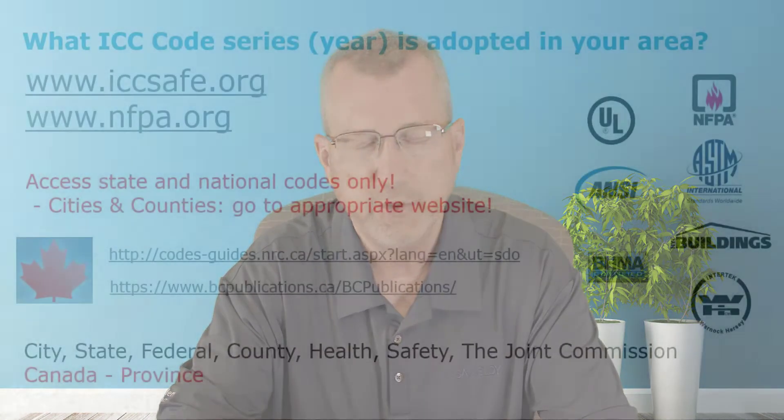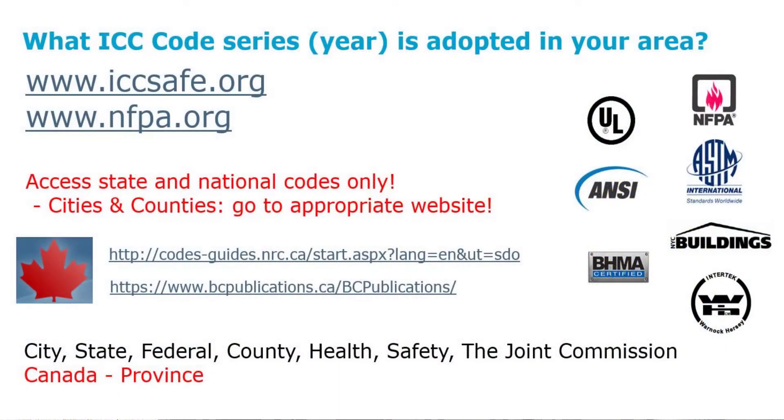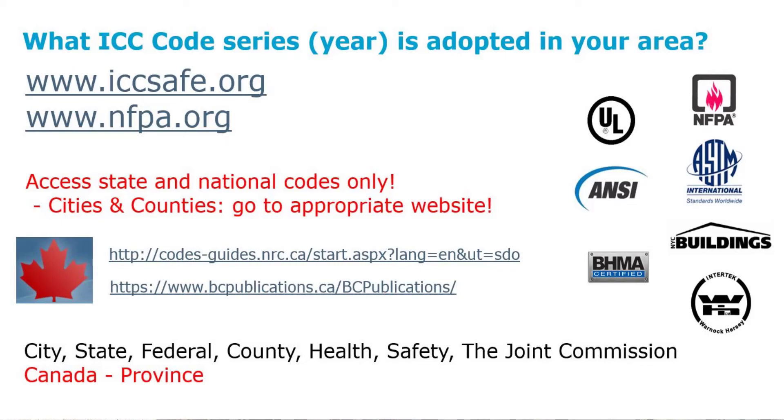The next section we're going to follow on with is codes and fire radio assemblies. We know that codes play a major part when we're taking something from a mechanical format into electrical format. For the last 12 years or so, codes have been available for us to read for free. If you go online, go to iccsafe.org or nfpa.org — you can go to those two websites and read the codes.